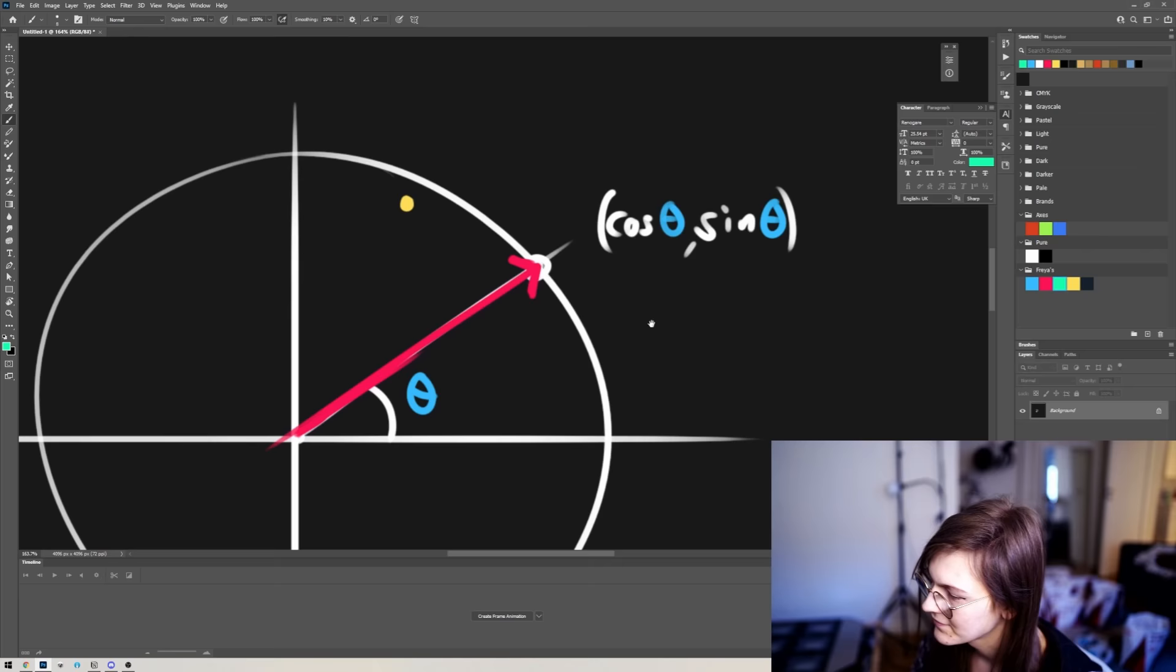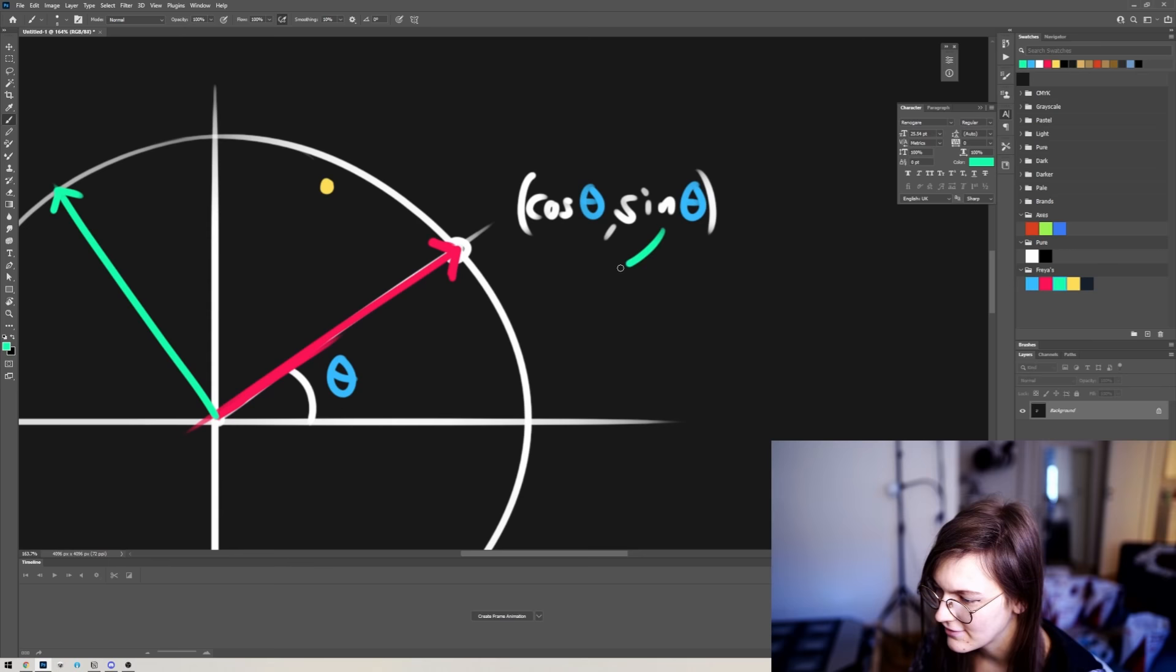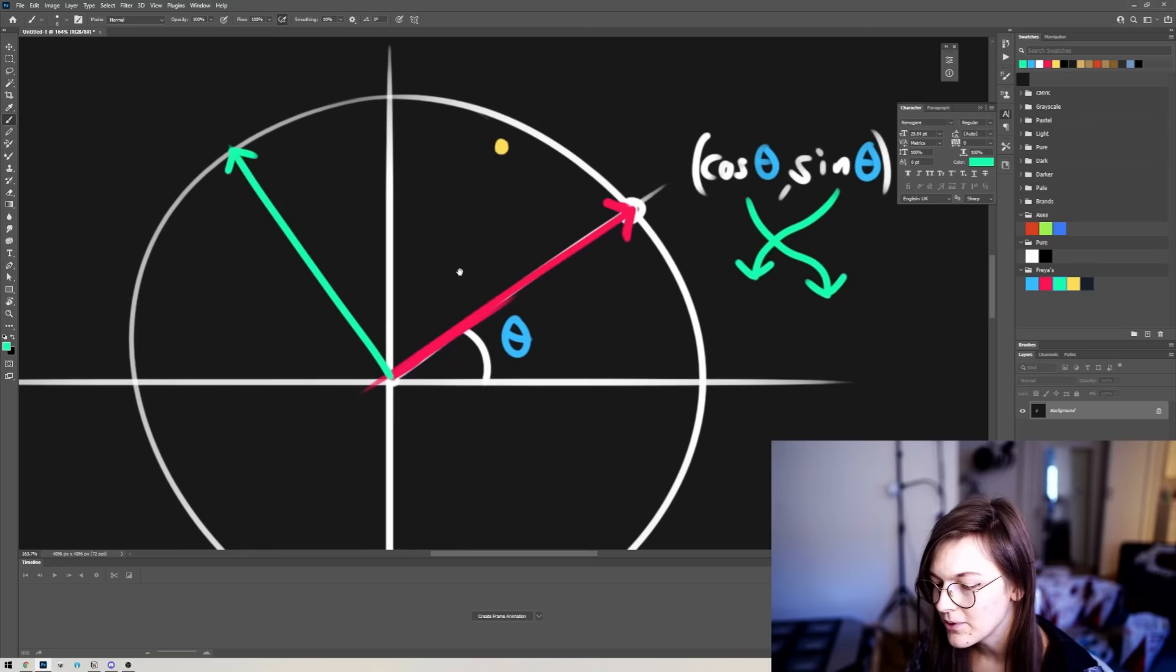Now, if we want to get the other vector, if we want to construct a coordinate system, then we can just swizzle this one. So effectively, what we can do is that if we swap these two and negate one of them, then we rotate this vector by 90 degrees. And depending on which one we negate, we will either rotate counterclockwise or clockwise.